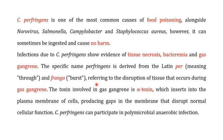The toxin involved in gas gangrene is the alpha toxin, which we will focus on in detail. The alpha toxin inserts itself into the plasma membrane of the cell, thereby producing gaps in the membrane. These gaps in the membrane disrupt normal cellular function.